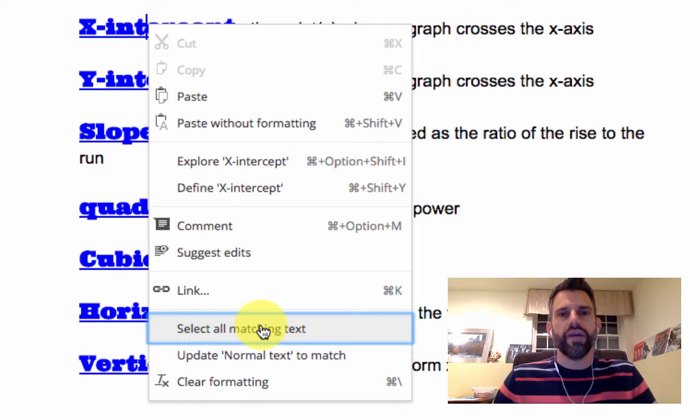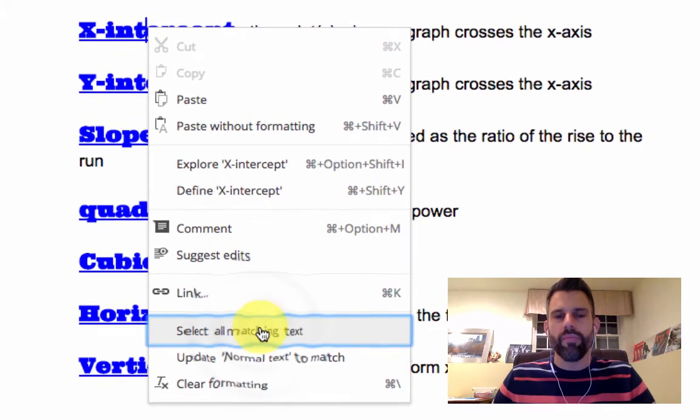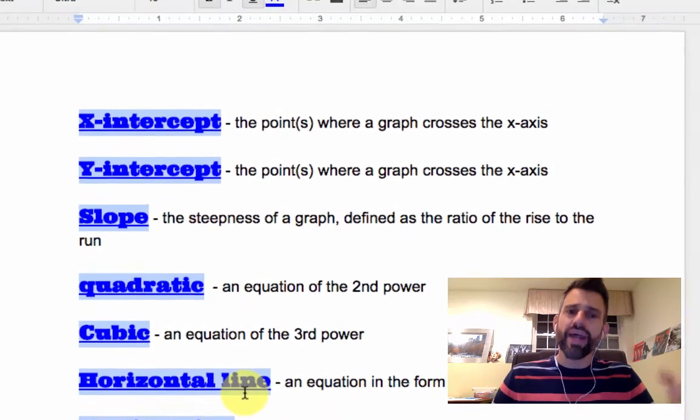And what Google Docs will do is it'll find every piece of text in this document that has the same exact formatting. So sometimes it might leave some things out because maybe the spacing is different, a double space line or it was space and a half lines or it's bold, but it's not italics or whatever it might be. But when I click it, it highlights all that text.